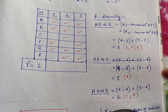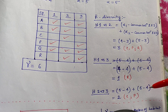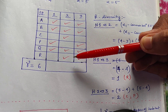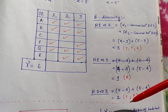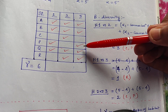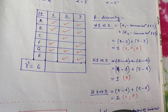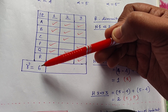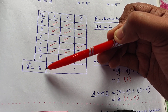For beta diversity between Habitat 2 and 3: alpha 2 minus common species between 2 and 3, plus alpha 3 minus common species between 2 and 3. There are 4 common species, so 5 minus 4 plus 5 minus 4 equals 2. The two different species are C (only in Habitat 2) and P (only in Habitat 3). Gamma diversity is the total number of species in all habitats — here 3 habitats contain 6 species total, so gamma diversity is 6.